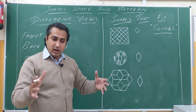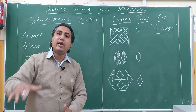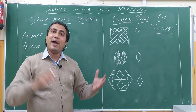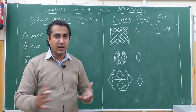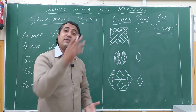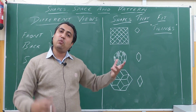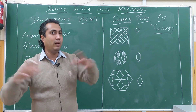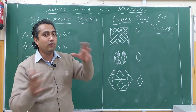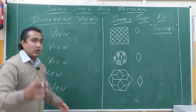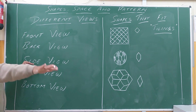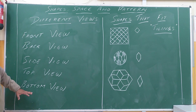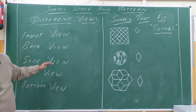So these are the different views when we are talking about different shapes. For a cuboid or a cube, side view, front view, and back view will differ. If it is a cylinder, side view, front view, and back view will be the same. Even for a cone, side view, front view, and back view will be equal. But top view and bottom view will be separate. For a cylinder, top view and bottom view will both be circles. We have front view, back view, side view, top view, and bottom view.